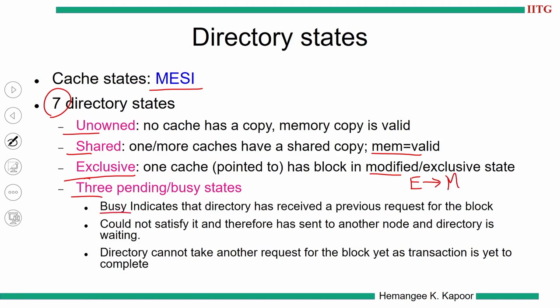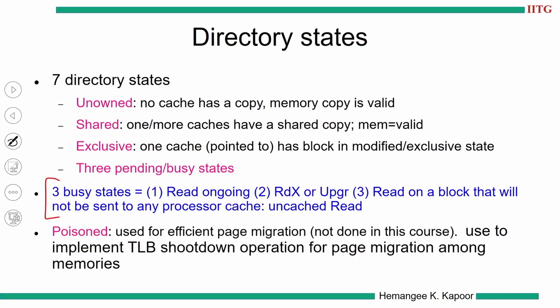Understanding the states, we now look at how directory information is stored. The directory is flat memory-based using a bit vector. The bit vector is 64 bits wide. With 64 bits, one can address 64 nodes, since there is a one-to-one correspondence between bit position and node ID: a 0 means the cache block is not present at that node, a 1 means it is. With 64 bits we can only address 64 nodes, but the Origin 2000 supports up to 1024 processors, so we need a way to manage a 64-bit entry for a 1024-node system.